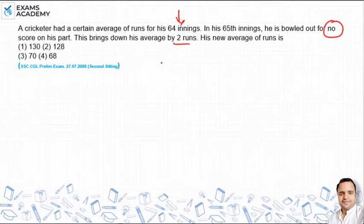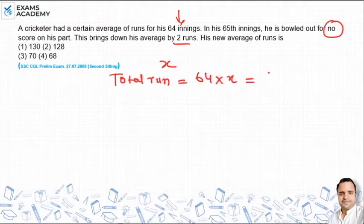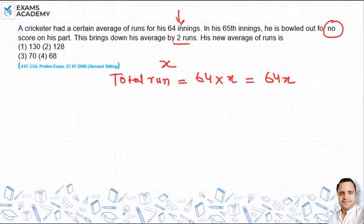If we have 64 innings, let the average of 64 innings be x. Then the total runs for 64 innings is 64x. In his 65th inning, he scores 0, so the total runs for 65 innings is still 64x. The total runs divided by 65 innings gives the new average.